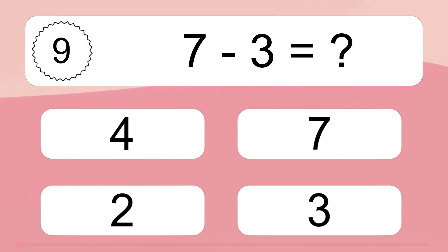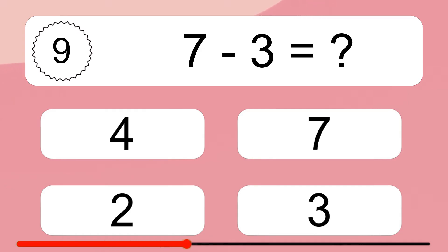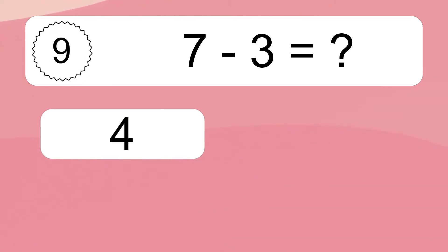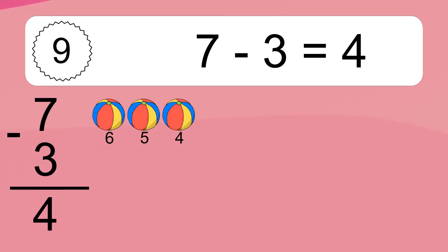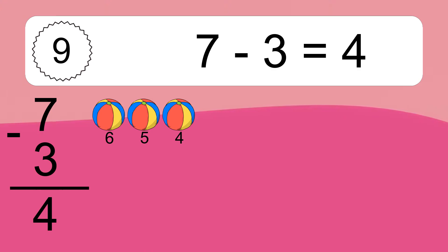11 minus 7 minus 3 equals what? 11 minus 7 minus 3 equals 4. Let's count it. 6, 5, 4.